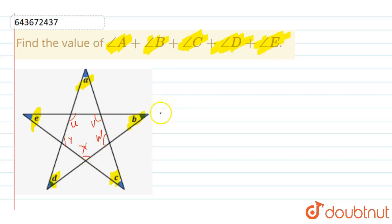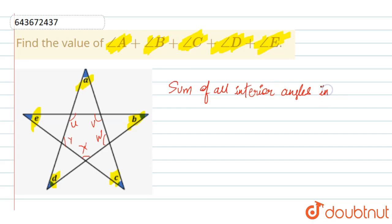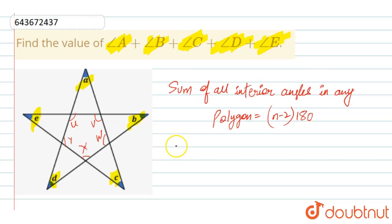We are considering all the interior angles. According to the formula, the sum of all interior angles in any polygon is equal to (n minus 2) into 180. As we can see, it's a pentagon — all sides are exactly equal, five sides — so 5 minus 2 into 180 gives 3 into 180, which equals 540°. This is equation number 1.